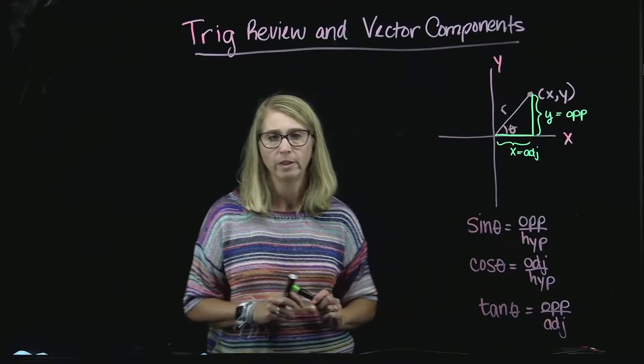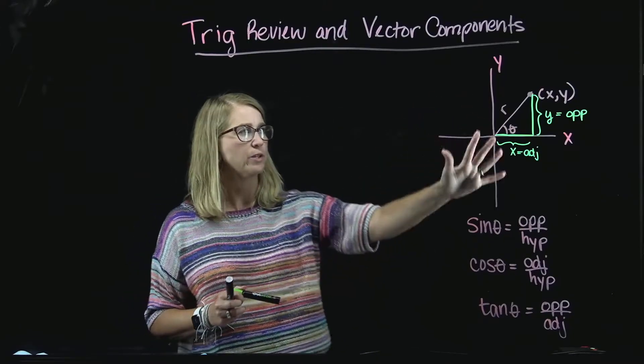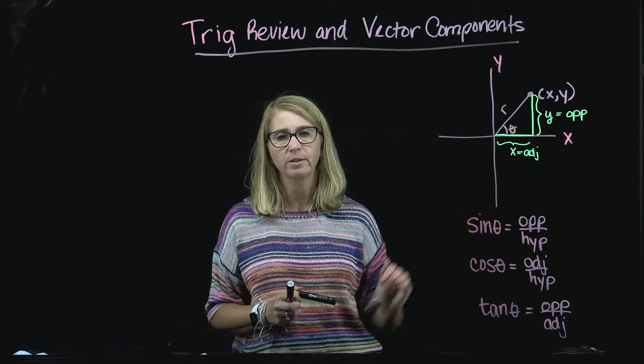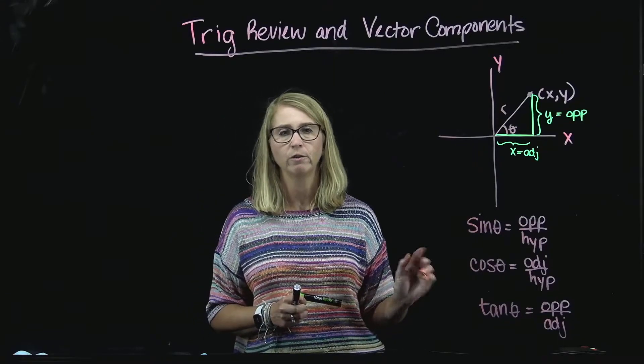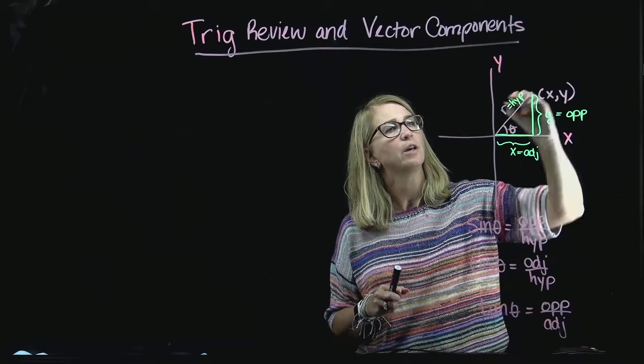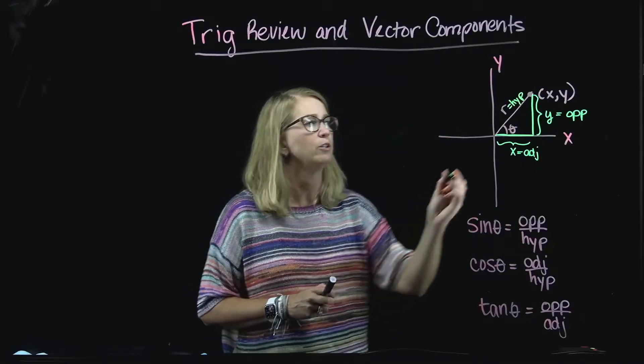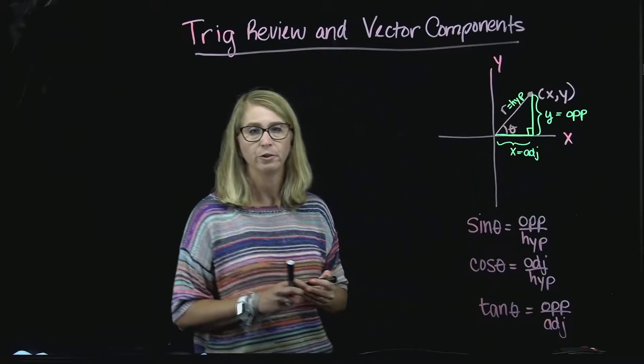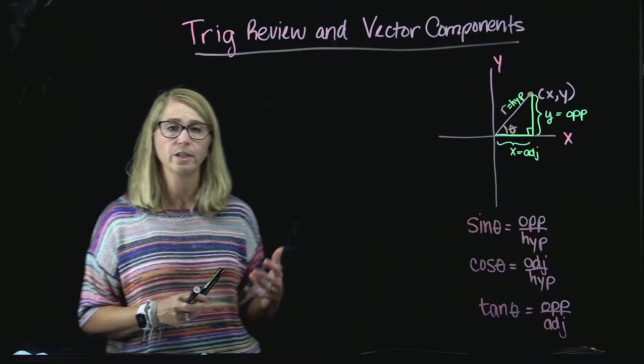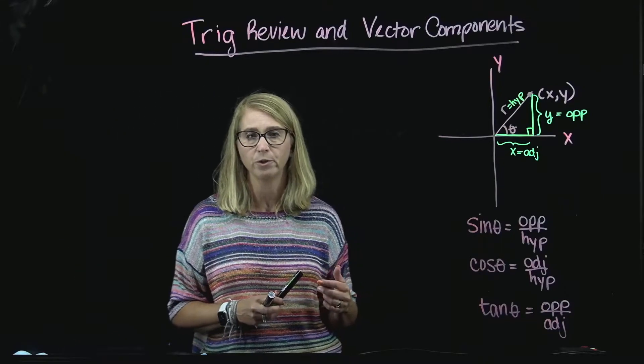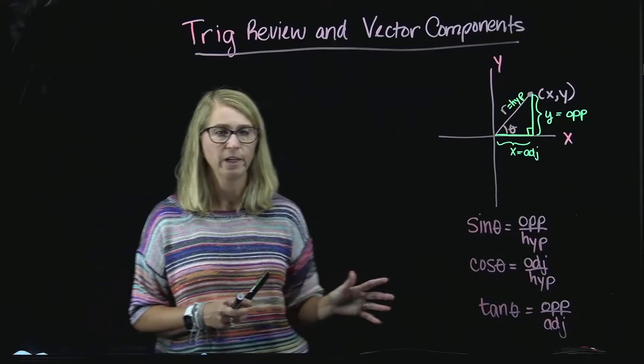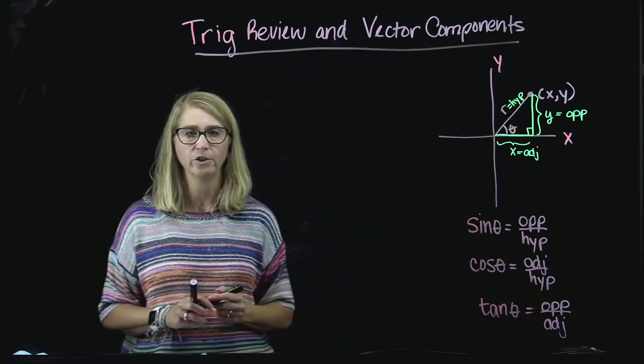because I want to remind you of the trig functions that you learned in high school. So, the sine of the angle theta is going to be equal to the opposite side over the hypotenuse. And I didn't label that yet, but this is the hypotenuse of our right triangle, because this angle right here is 90 degrees. The cosine theta is defined as the adjacent side over the hypotenuse. And the tangent of theta is defined as the opposite side over the adjacent side.